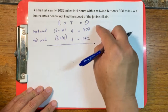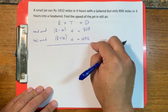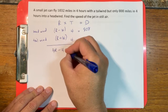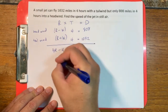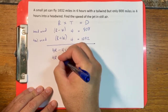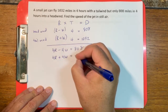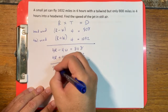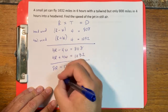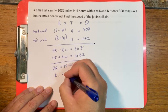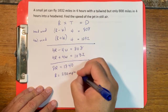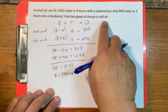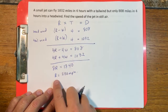Distributing the 4 in each equation, then subtracting one equation from the other, the W terms cancel and we get 8r = 1,840. Therefore r = 230 miles per hour. The question asks for the speed of the jet in still air — that's what we got: 230 miles per hour.